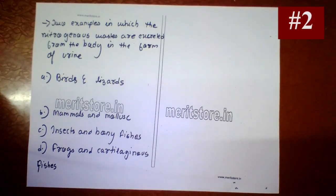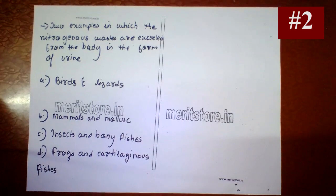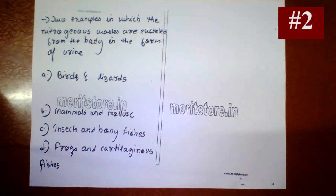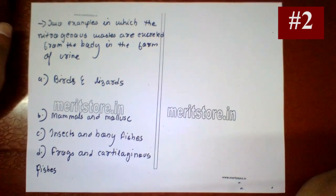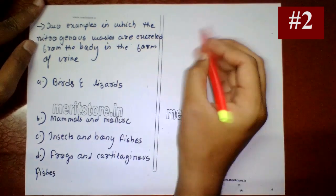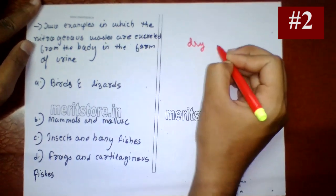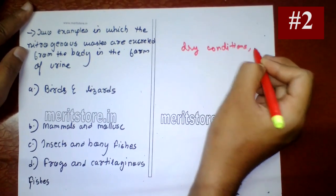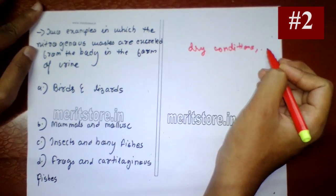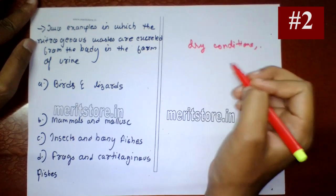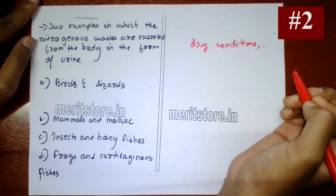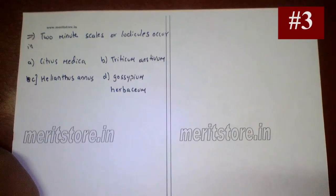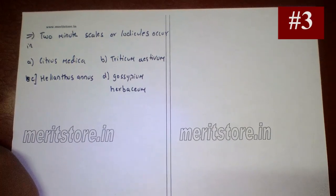Two examples in which nitrogenous waste is excreted in the form of uric acid are birds and lizards. Animals like birds and lizards, which live in dry conditions, are known as uricotelic animals. They have to conserve water for survival, so they secrete nitrogenous waste in the form of uric acid, as its excretion requires a minimum amount of water. So option A is the correct answer.